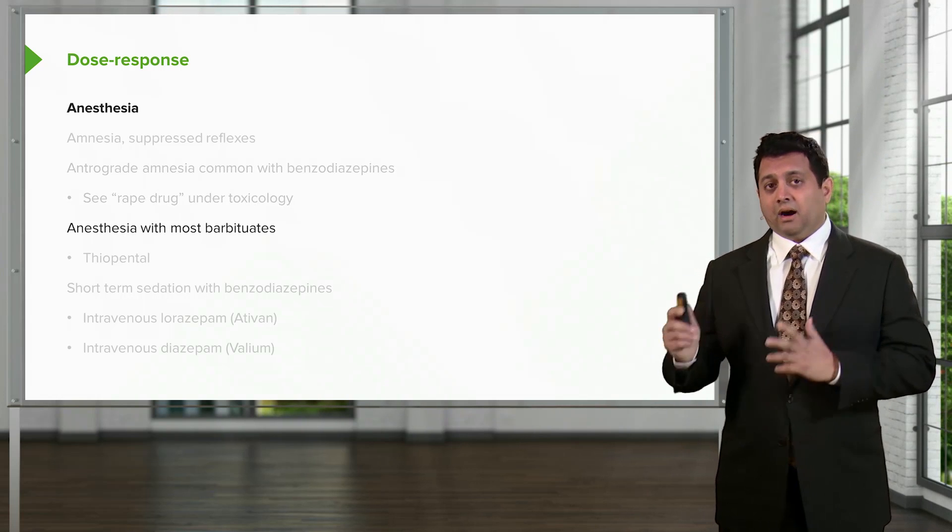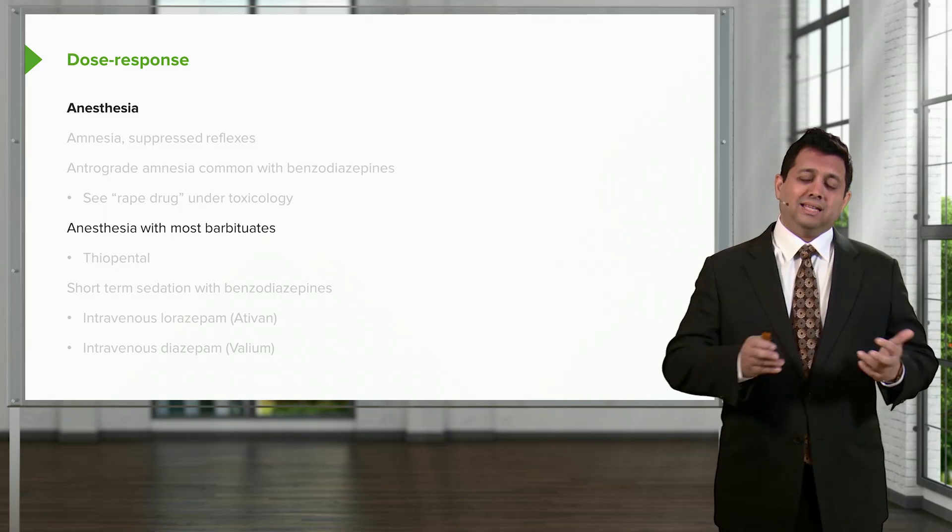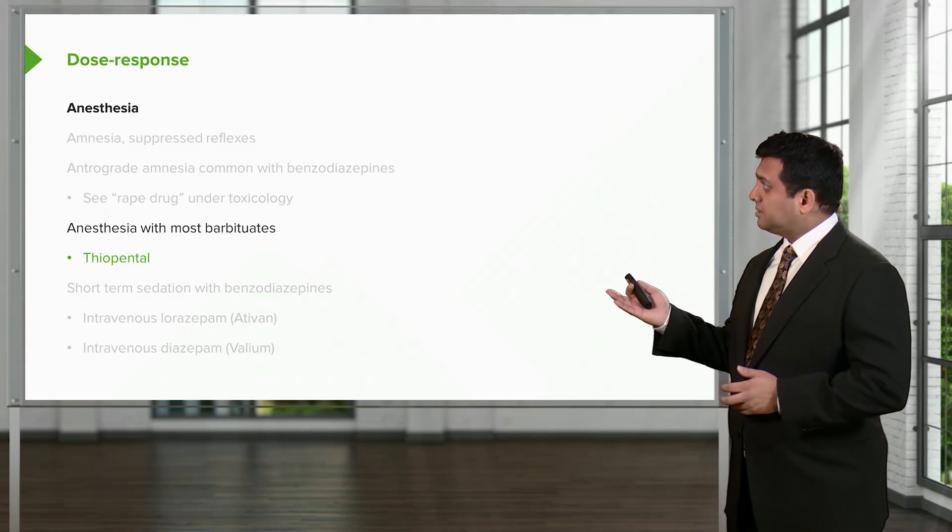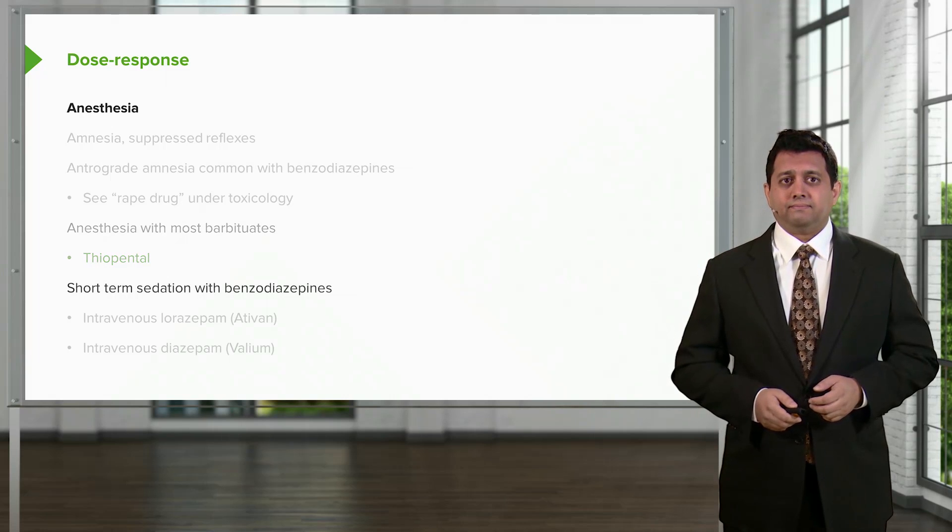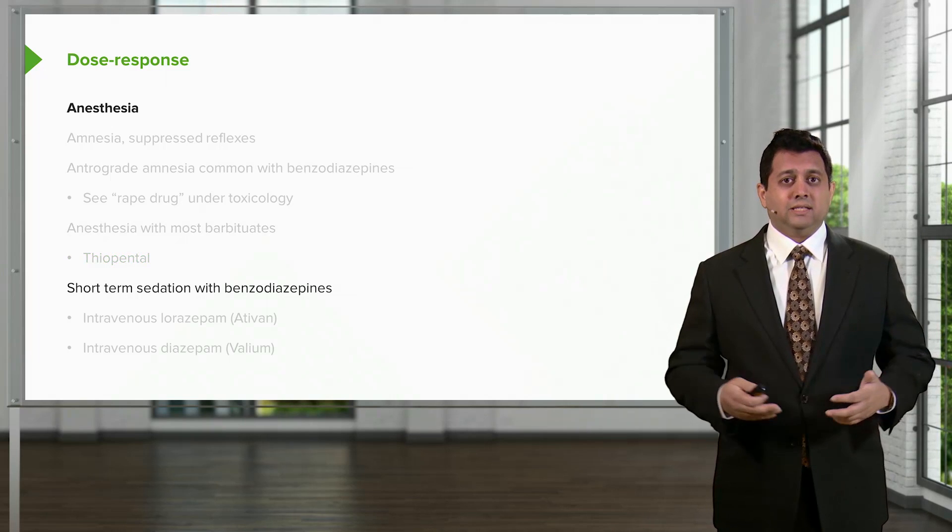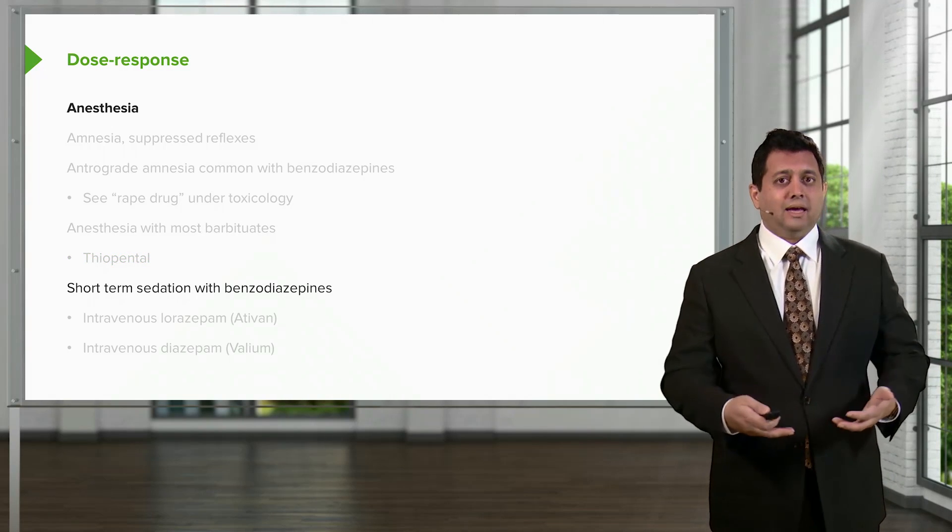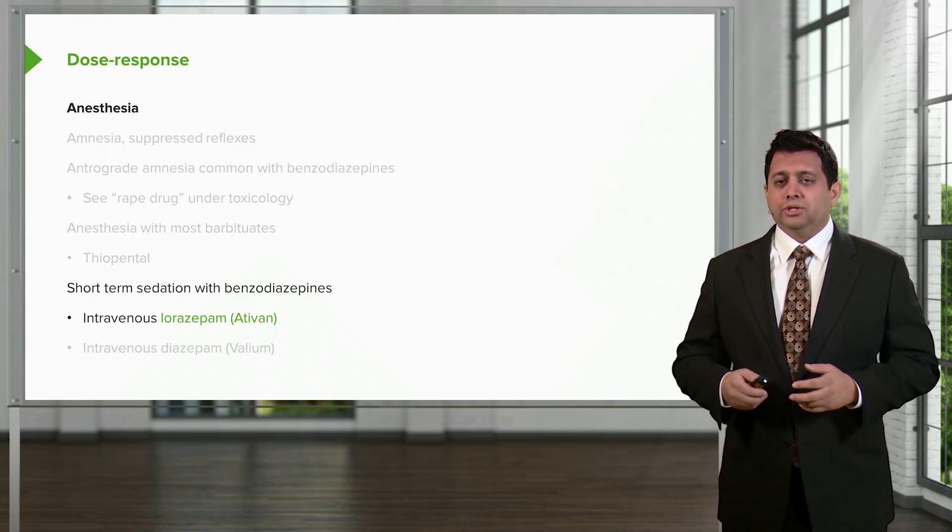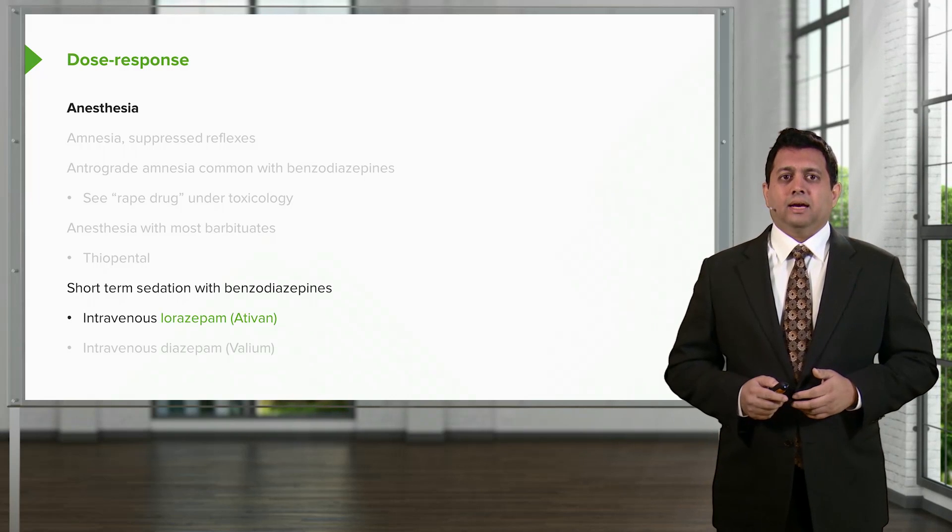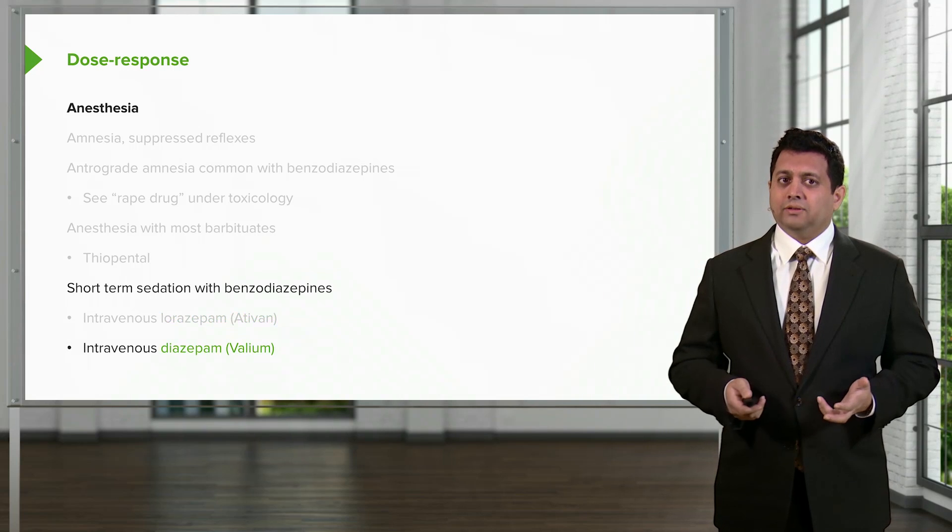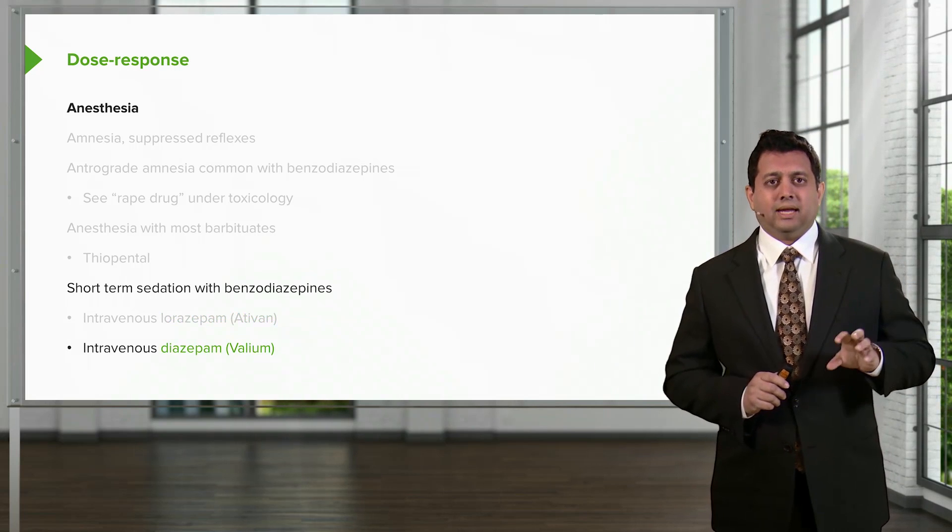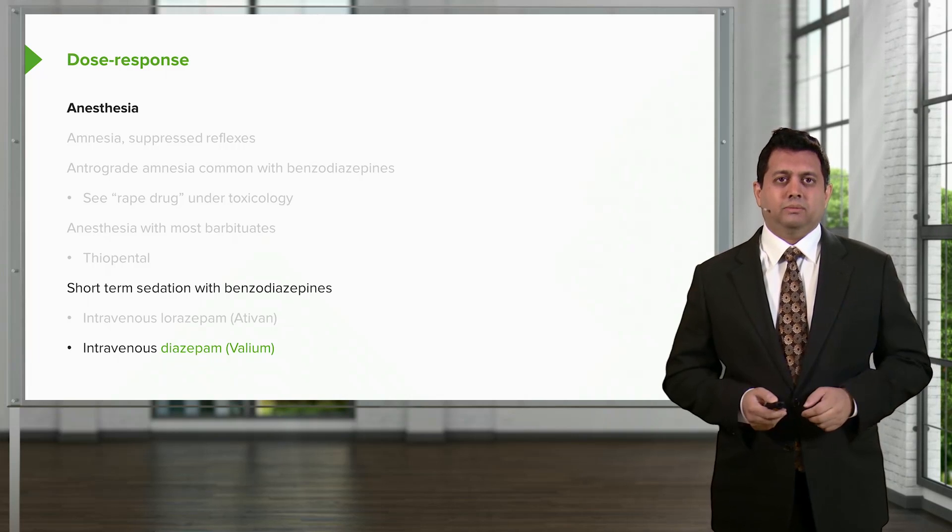Now in the operating room, we're using a lot of barbiturates. In the intensive care unit, we use a lot of benzodiazepines. In the operating room, one of the most common benzodiazepines used is thiopentol. Now short term sedation with benzodiazepines is excellent. So when I was working in the intensive care unit, I would often use IV Ativan or IV Lorazepam to sedate my patients for rapid sequence induction and intubation. Many other anesthetists seem to prefer intravenous diazepam. I preferred Lorazepam. Whatever you choose, it doesn't really matter. Just recognize that these are the two main agents that we use intravenously for short term sedation.